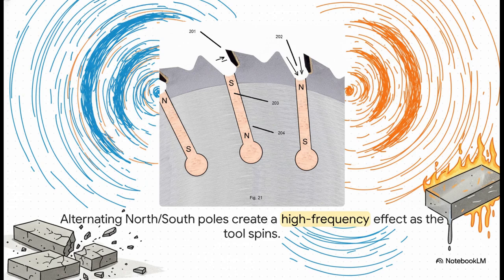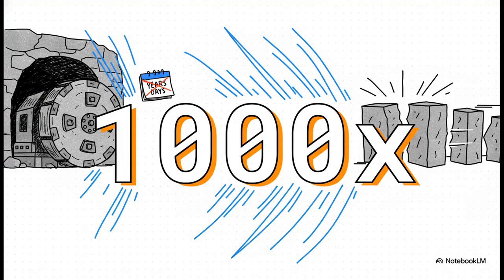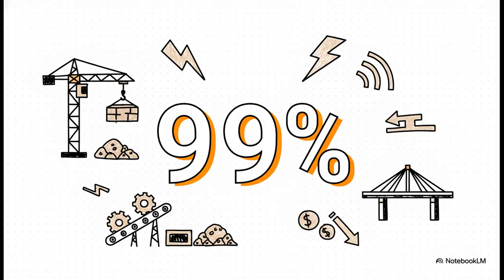So if this thing actually works the way the patent describes, what does that mean? We're not just talking about an improvement here, this isn't just a slightly better tool. This is a complete game-changer in how we interact with stone. Get ready for this: the patent claims this could increase the cutting speed by a factor of 1,000. 1,000 times faster. Let that sink in. That's the difference between a tunnel project taking years and that same project taking just a few days. And when you get that kind of speed, an absolutely staggering cost reduction follows. The patent is talking about making these operations up to 99% cheaper. The economic impact on everything from construction and mining to public infrastructure, it's almost impossible to wrap your head around.